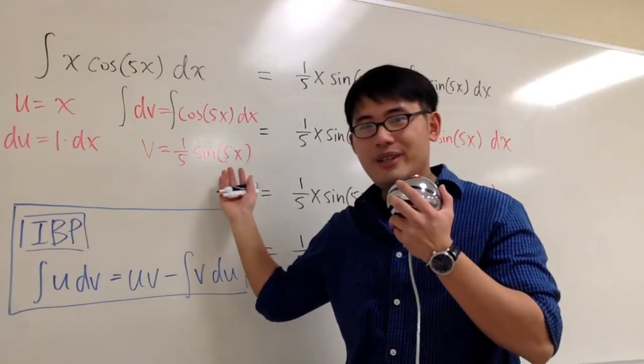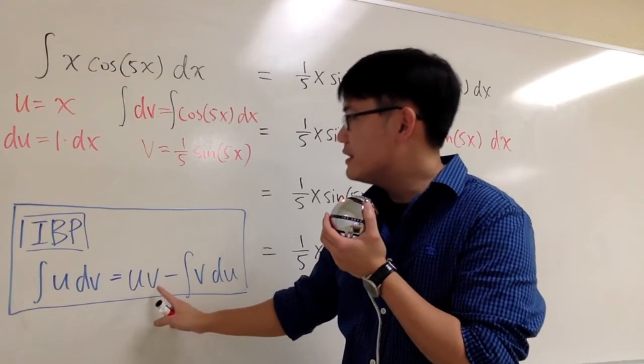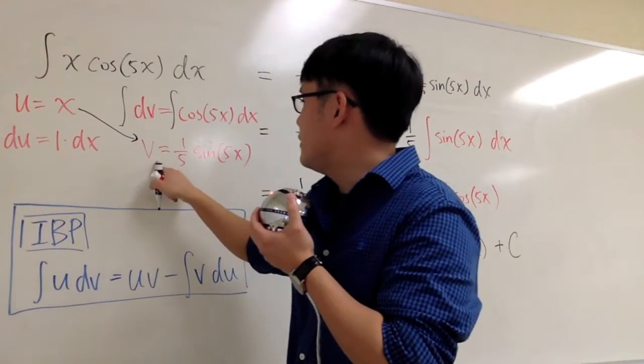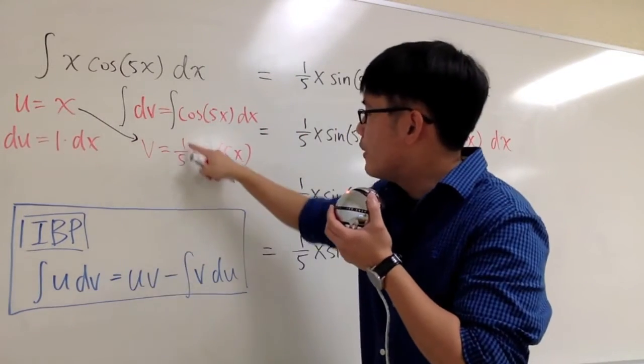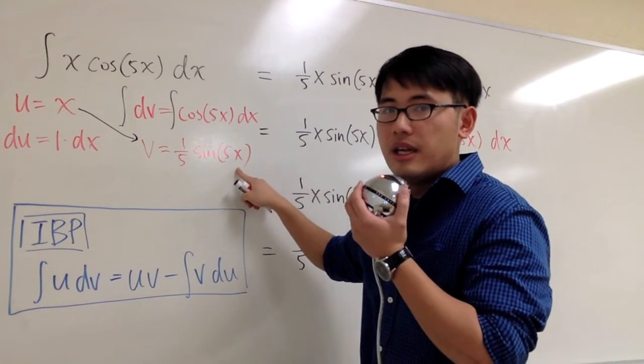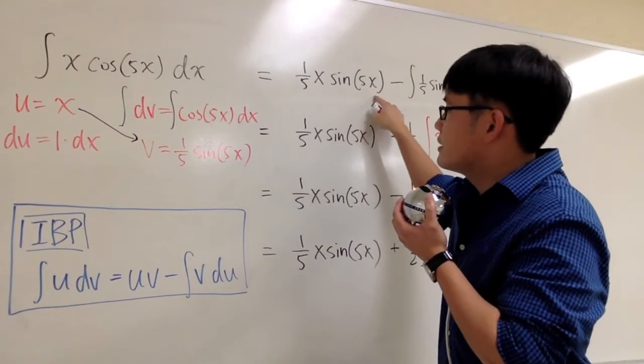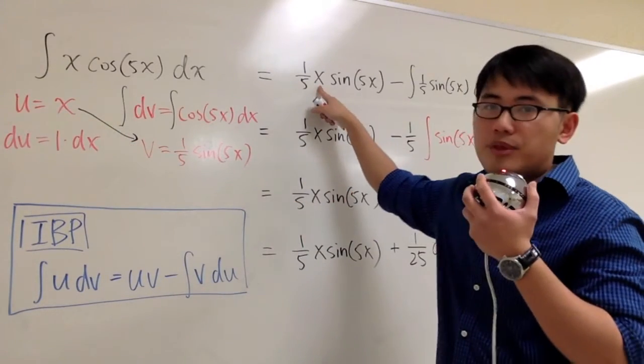We have the ingredients to do the integration by parts. It says I have to multiply u and v together, so the u is x, I'm going to multiply by v, which is that. Namely, I'm multiplying x times 1/5 sine of 5x. And I just put down 1/5 x sine of 5x. I multiply these two together. I have to put the x in the middle.